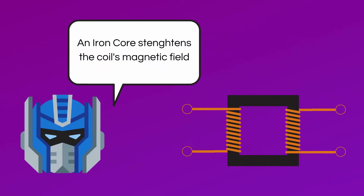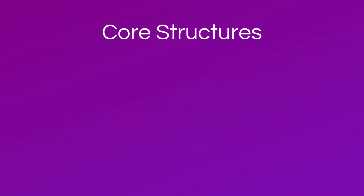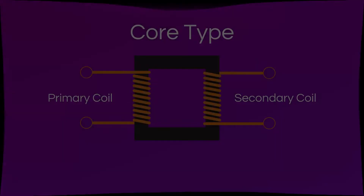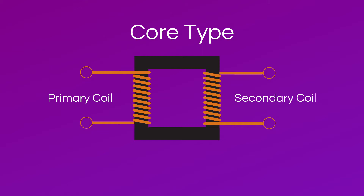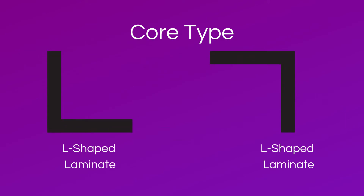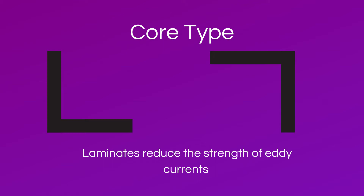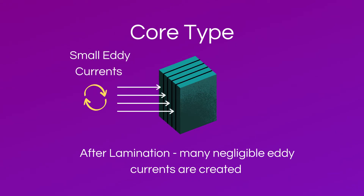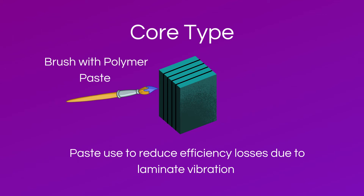The primary and secondary coils are wound around an iron core to strengthen the coil's magnetic field. The three main core structures are core type, shell type, and toroid type. The core type single phase transformer looks like a square with the primary coil on one side and the secondary coil on the other. It is actually made up of very thin L-shaped iron laminates that form a square when combined, along with a bobbin. Laminates are used to reduce the strength of eddy currents — an eddy current is created in a conductor by a varying magnetic field. By splitting the overall surface area into laminates, many weak eddy currents are created instead of one strong eddy current powerful enough to reduce the overall efficiency of the transformer. A polymer paste is brushed around the laminates to secure them so that there will be minimal efficiency losses due to vibrations.